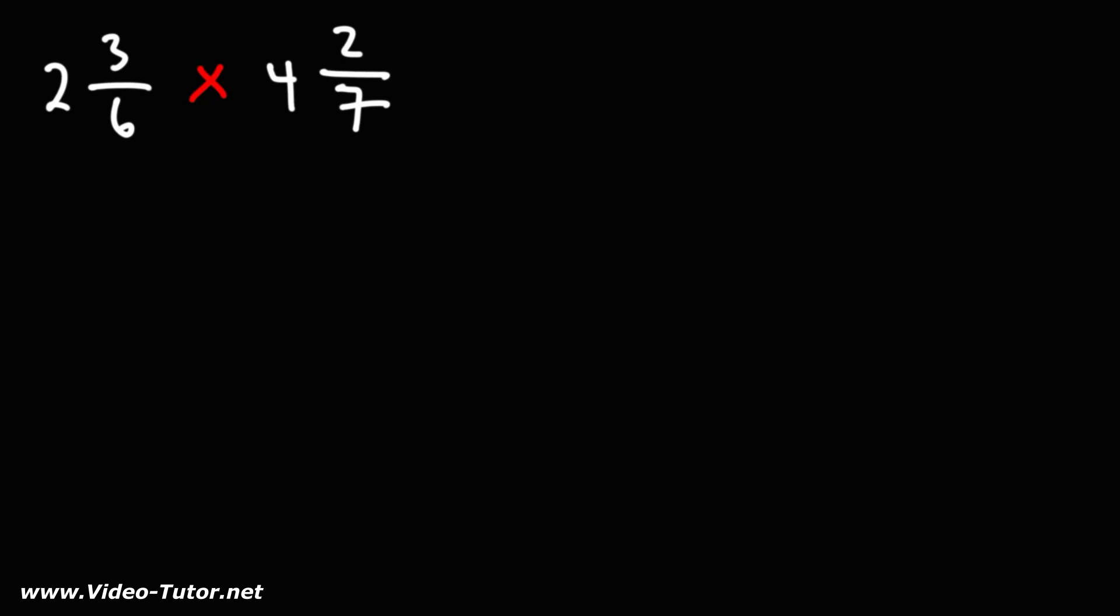In this video, we're going to talk about how to multiply mixed numbers using cross cancellation. So we have 2 and 3/6, and we want to multiply it by 4 and 2/7.